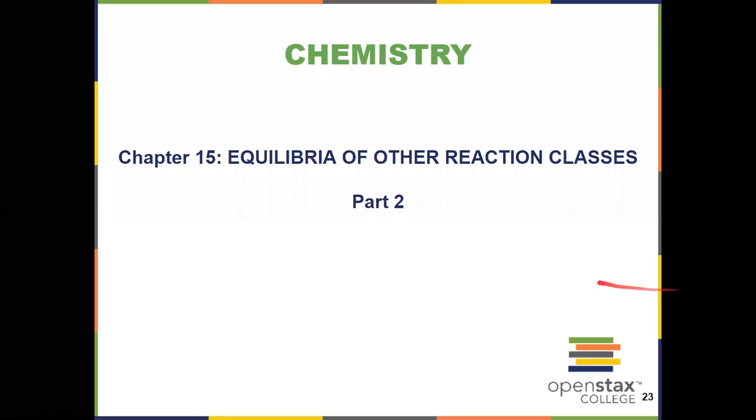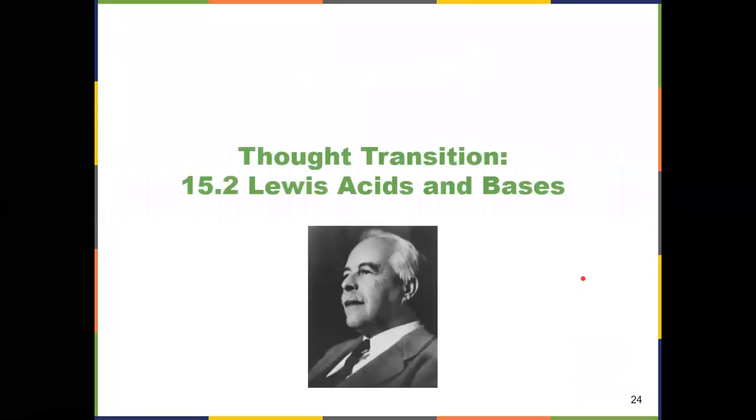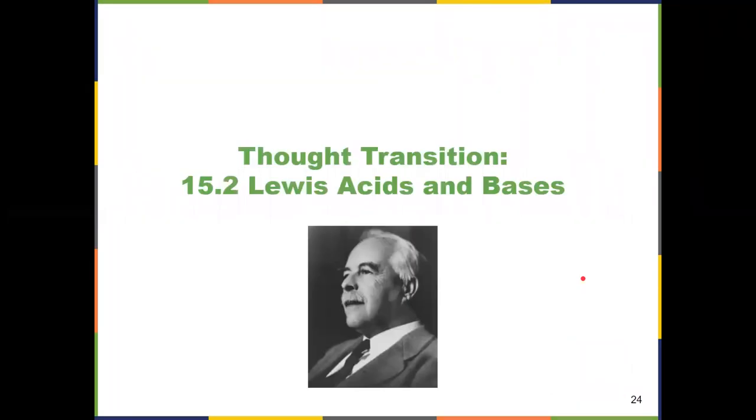All right, in video two here from chapter 15, we're going to have a thought transition from solubility product into building yet another type of K that we'll get at the beginning of video three, and we're working towards Kf, which is a formation constant. But to get there, we first have to learn about a third and final class of acids and bases.